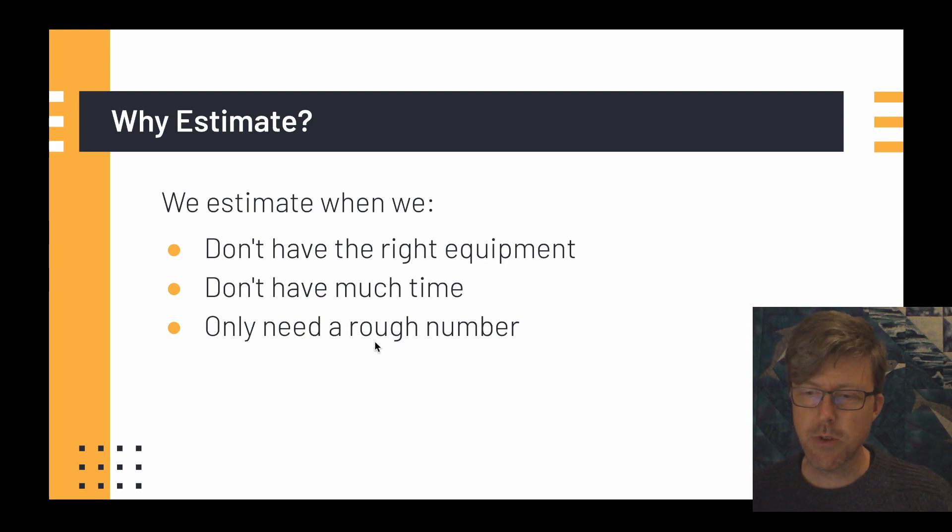Sometimes we estimate because we only need a rough number. We might want to know if we need to buy one or two gallons of paint. So we need to kind of estimate how much area of walls we need to paint and ceilings. And then we need to figure out how many gallons we need to get. We don't need to get the exact square inches of the wall or the exact square feet. We just need to figure out if we have enough paint or not. And however much we have left doesn't really matter if it's exact.